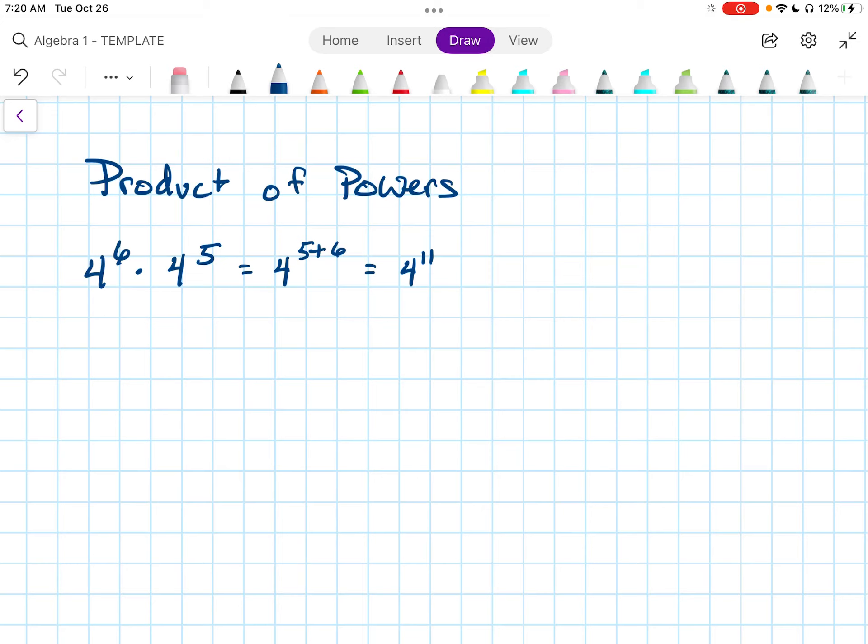In algebra terms, we would say A to the M times A to the N would be A to the M plus N. That's what we may need to make sure we know. If you have two things next to each other that have the same base, then you can add their exponents. If they're multiplying, you add the exponents.